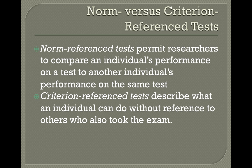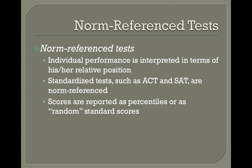For example, if you get your ACT score back and you get a score of 28, what does that mean? It doesn't mean you got 28% of the questions correct. It's just a score that's been normed to compare your performance to other students' performance. Contrast that with a criterion-referenced test, which seeks to describe what an individual can do without reference to others who also took the exam.